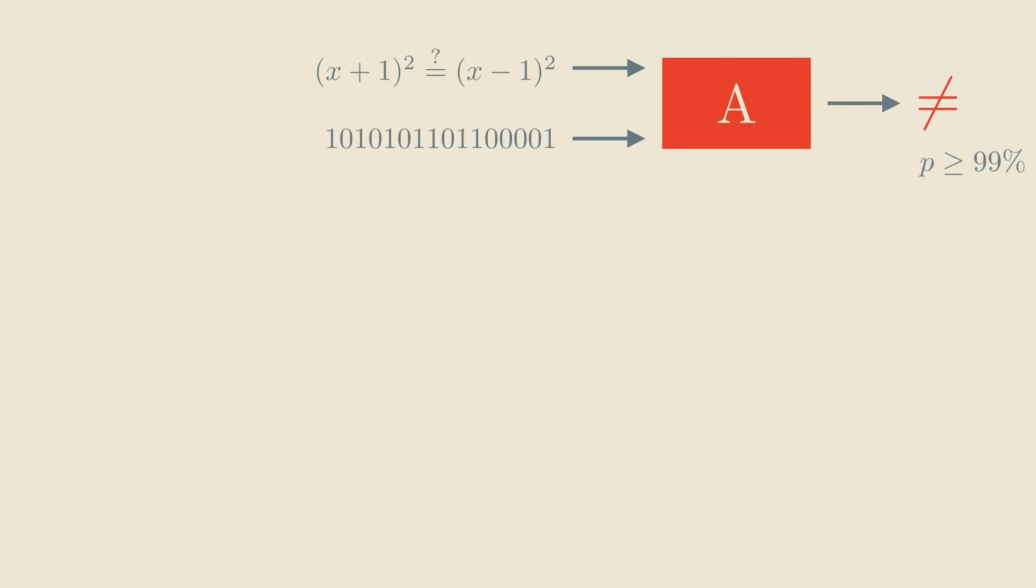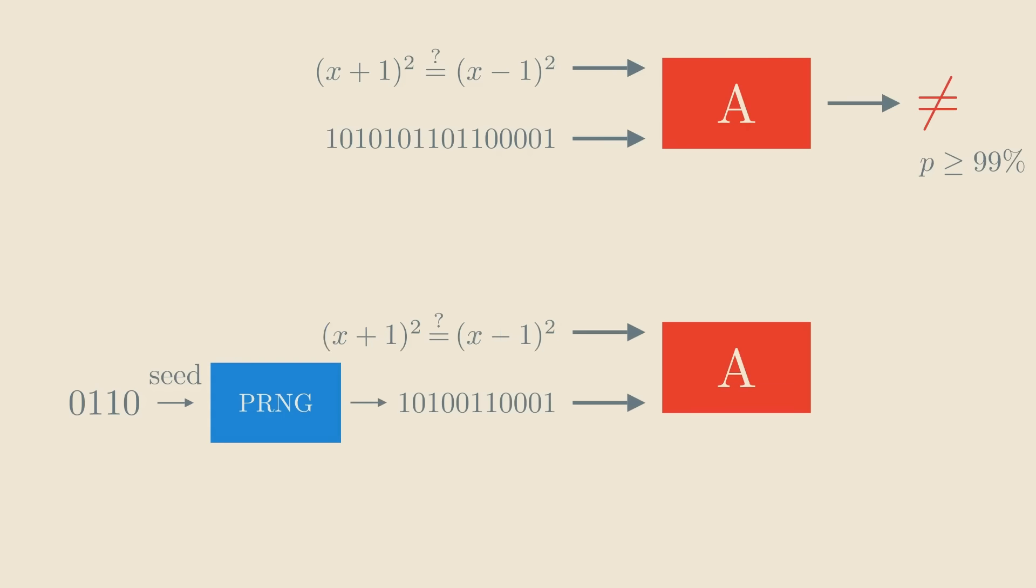I will now show that if we run A with bits from the Nisan-Wigderson generator instead, it's correct with a probability of at least 1%. That might not sound like a lot, but it will be enough.